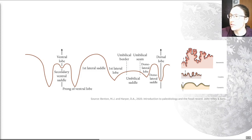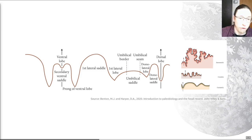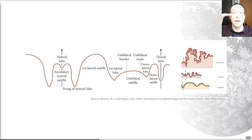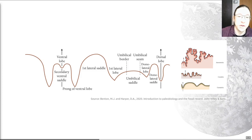A typical ceratite suture line shows frills on the lower portions. In ammonite suture lines, both lobes and saddles are fluted or frilled, and this group is dominant throughout the Jurassic and Cretaceous. As a rule of thumb, this gradation from goniotite to ceratite to ammonite is quite reliably followed through time — with the caveat that some Cretaceous species may have goniotitic or ceratitic grades of suture, so it's a useful but not universal rule.